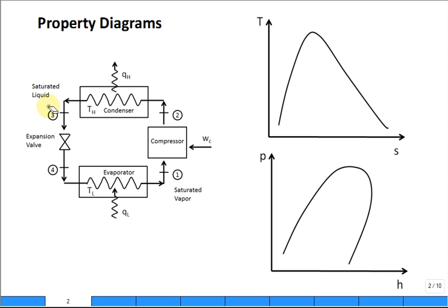One thing we need to introduce is property diagrams. So what we have is the standard setup for vapor compression refrigeration. Saturated vapor at state one is fed into the compressor. It's superheated vapor. It comes out of the condenser as saturated liquid.